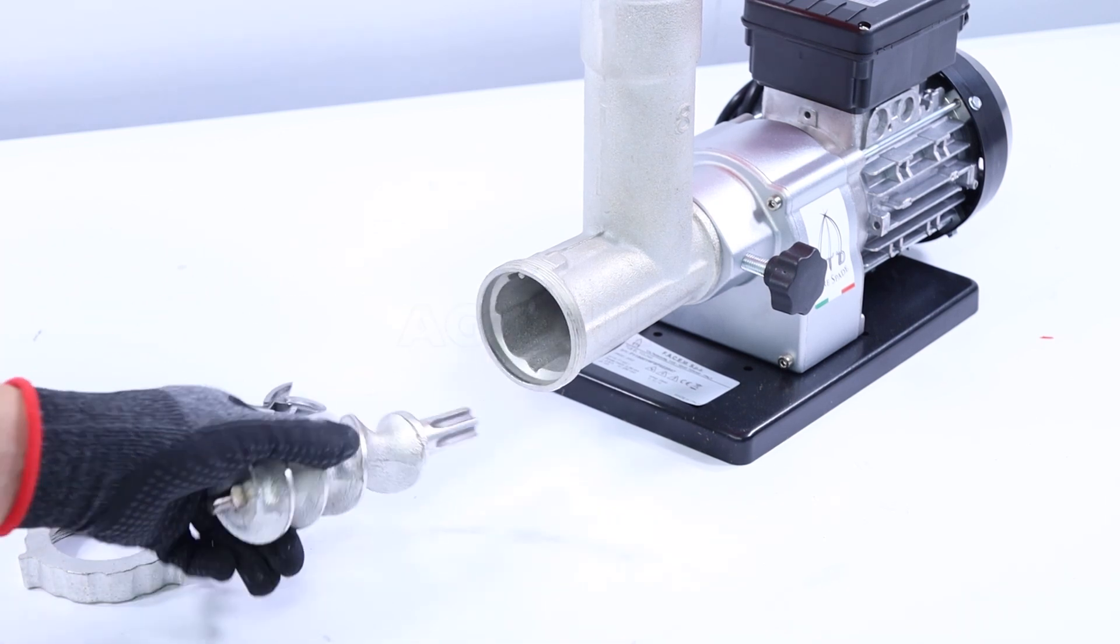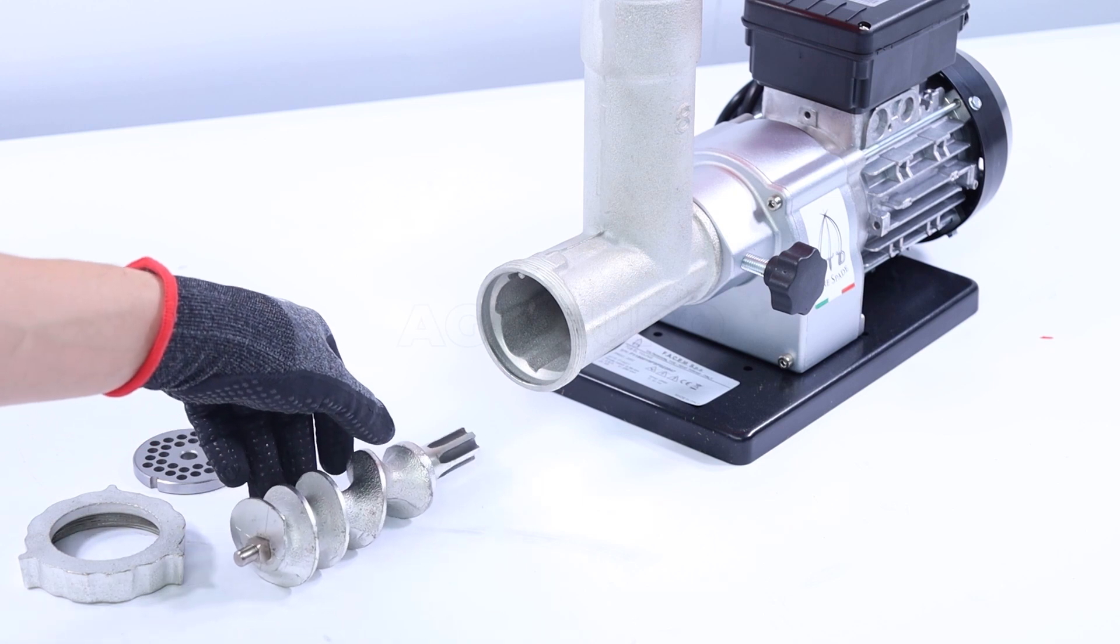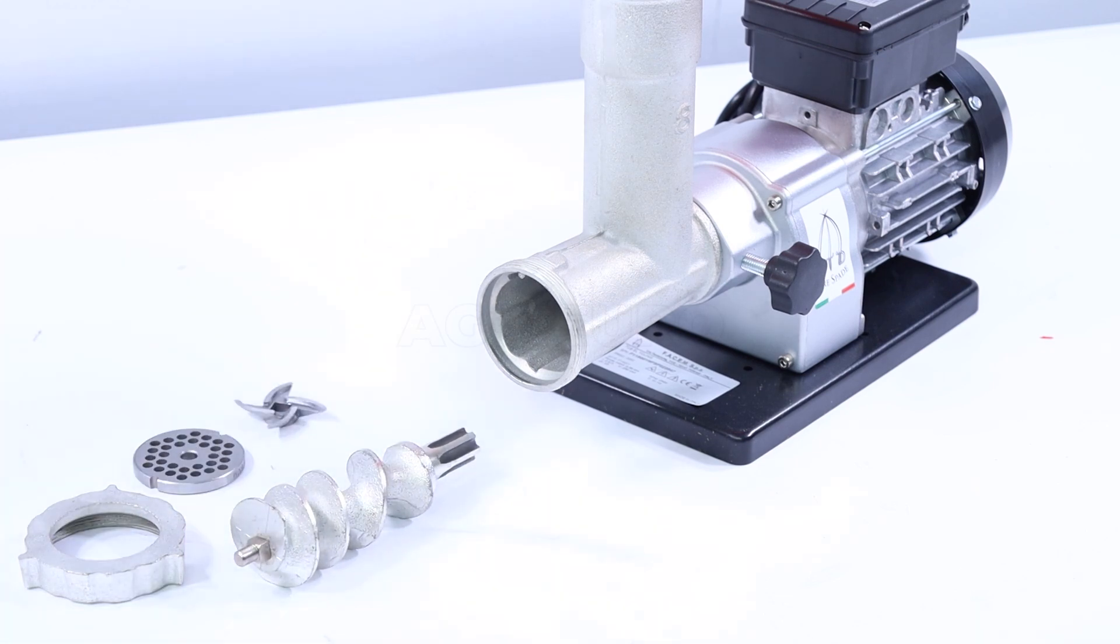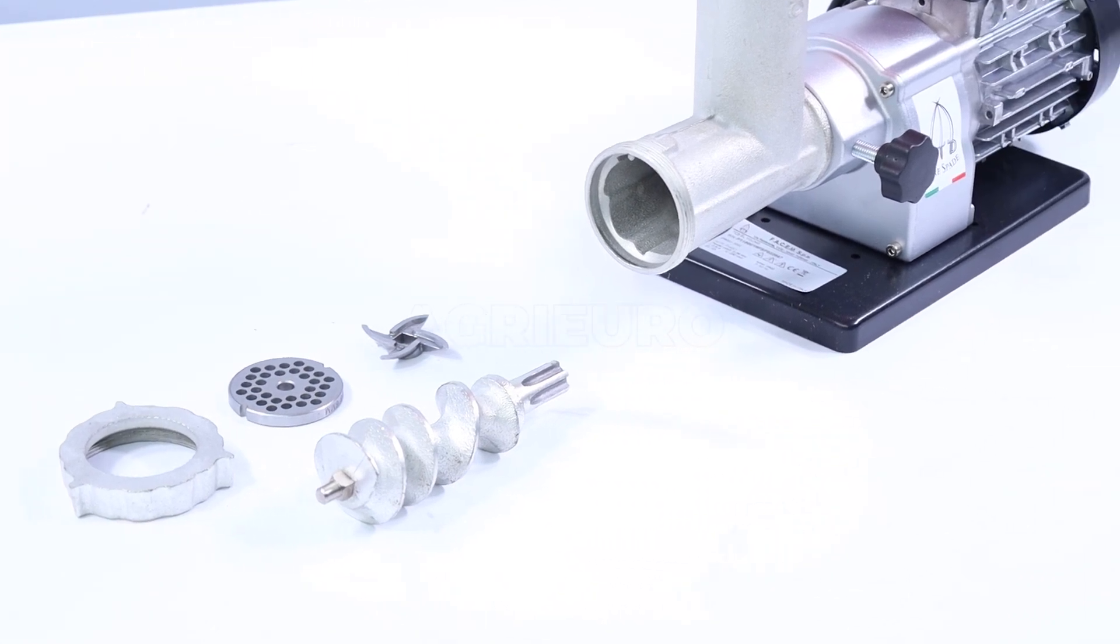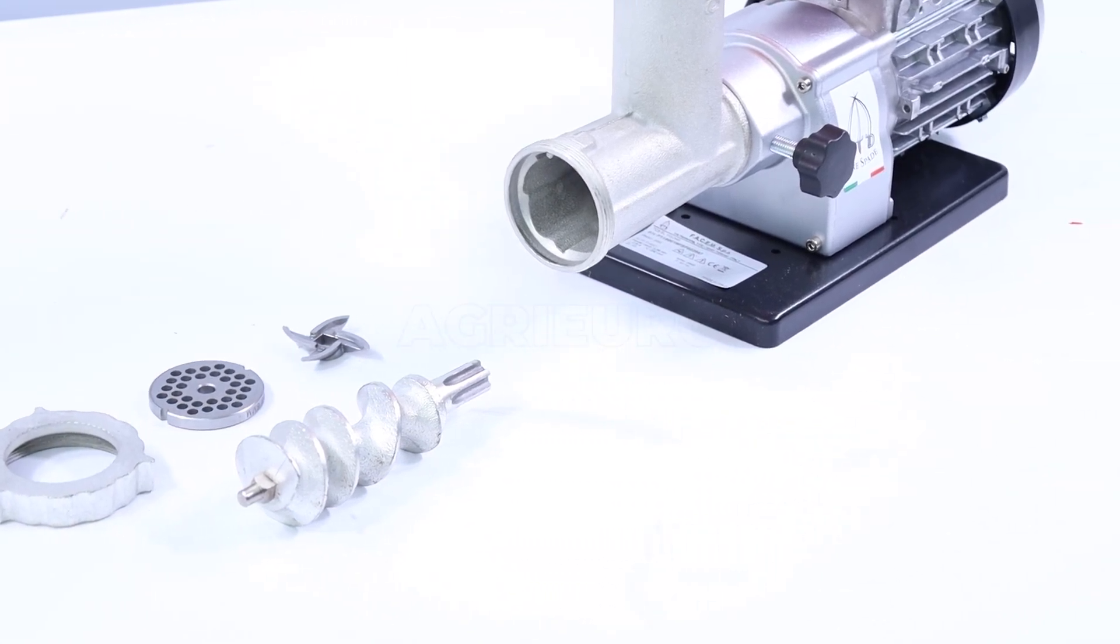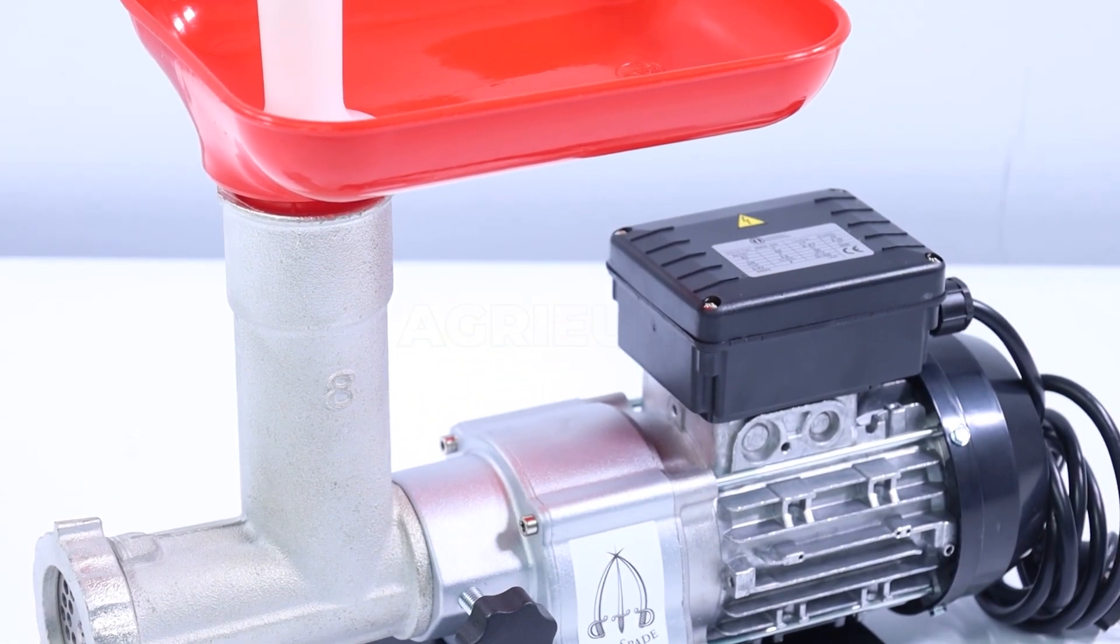Despite these high-level specifications, the meat grinder also stands out for its ease of disassembly. The overall dimensions of the device are 21 by 44 by 32 centimeters with a weight of 12.5 kg, ensuring maximum efficiency in every professional context.